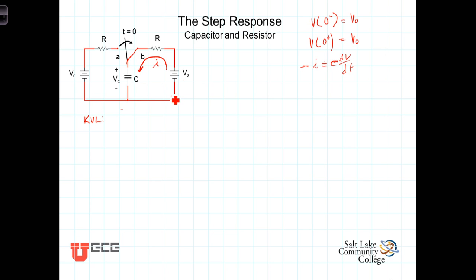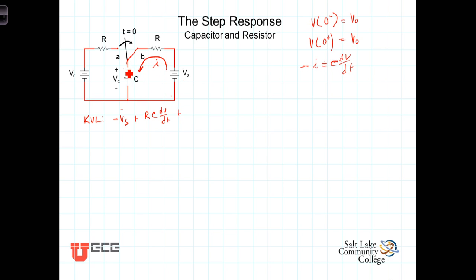Starting here at this point, going minus to positive, that's a voltage increase of negative V sub S. Plus, the voltage drop across the resistor is I times R, but we know that I equals C dV/dt, so it'll be R times C dV/dt. Then, coming on around here with the current going from plus to minus, we encounter the voltage as a drop, so that will be plus V sub C. The sum of those three terms then equals zero.